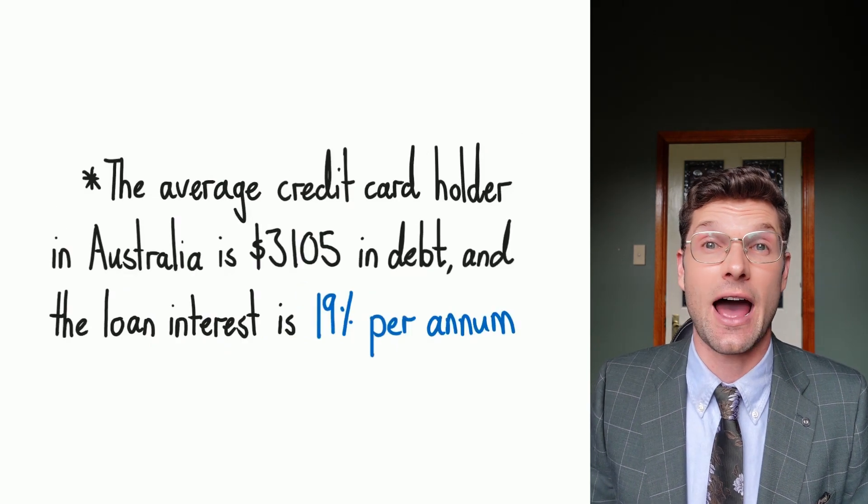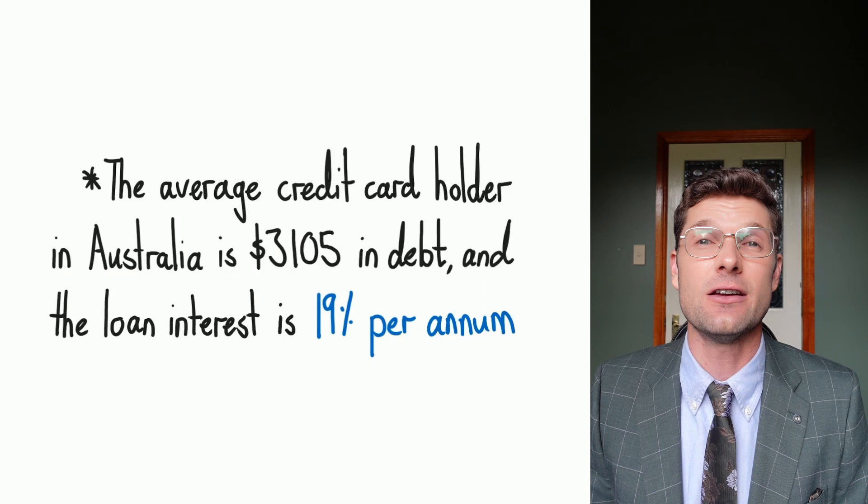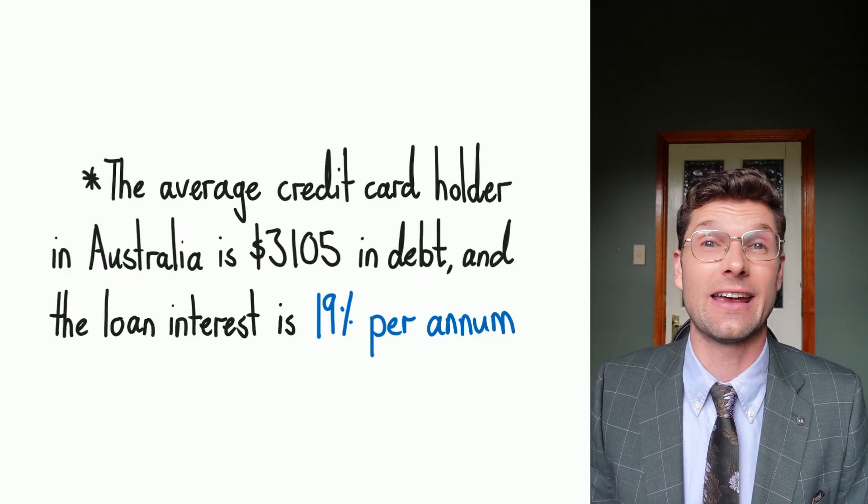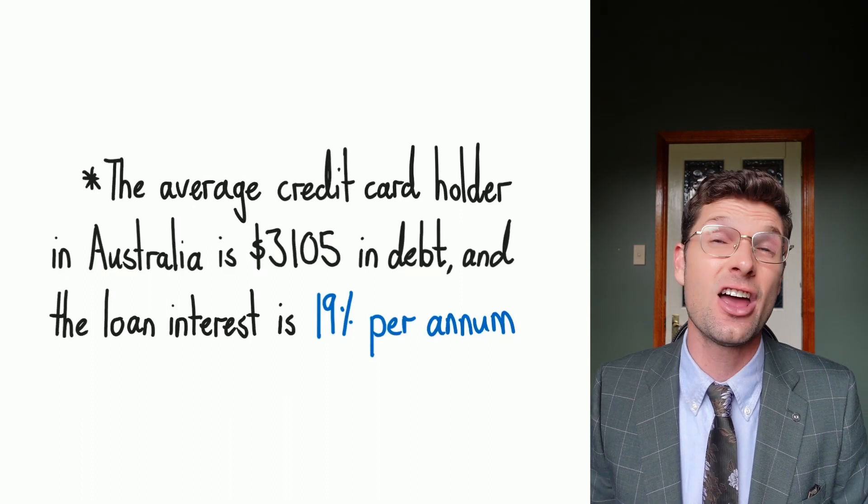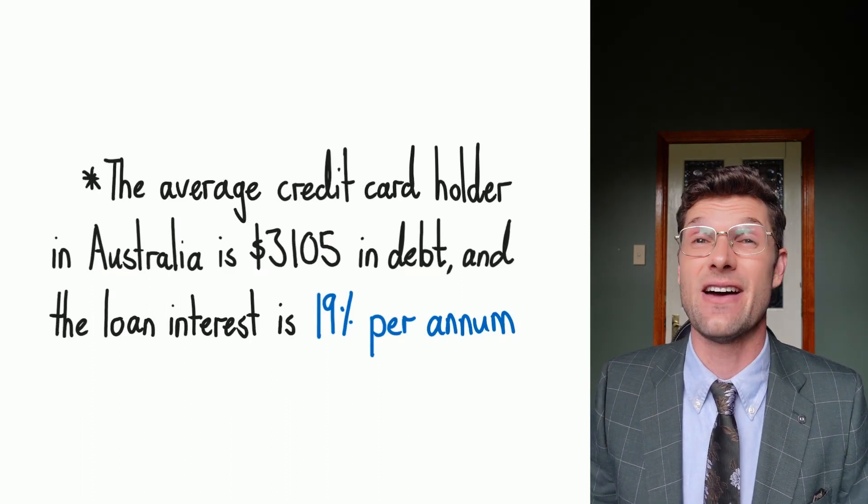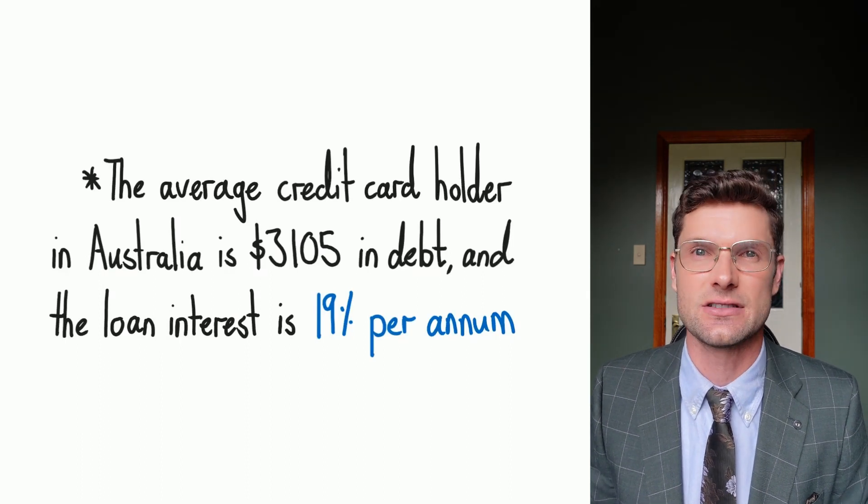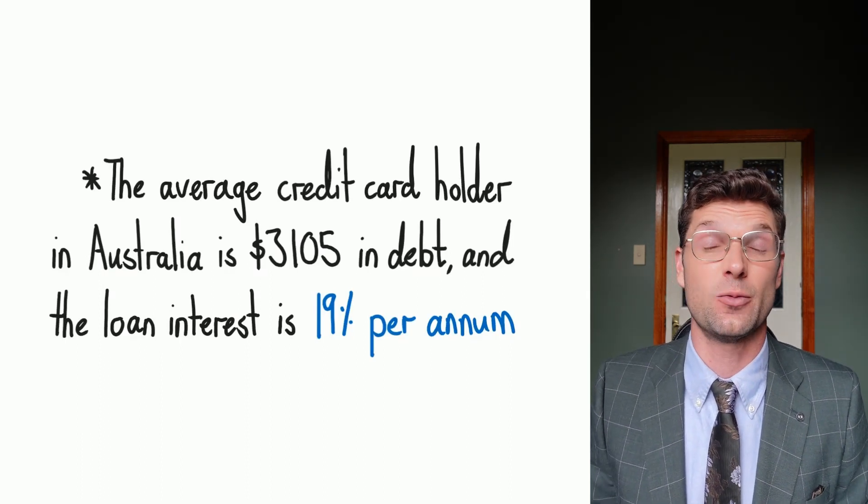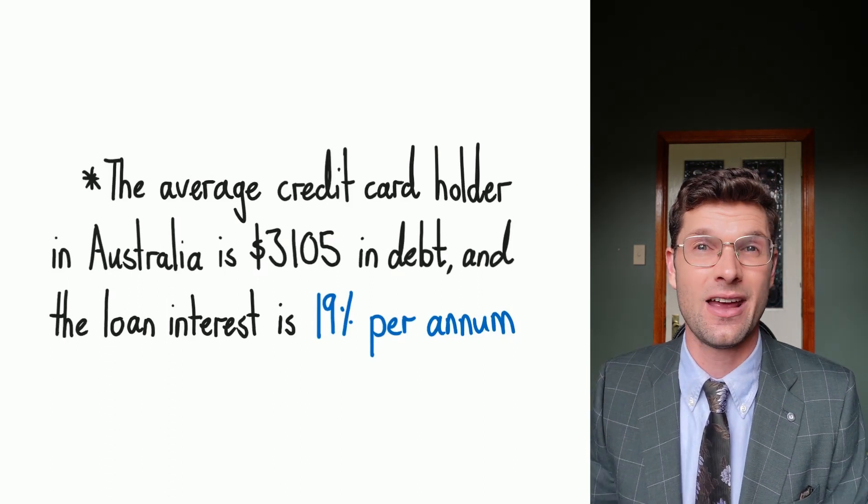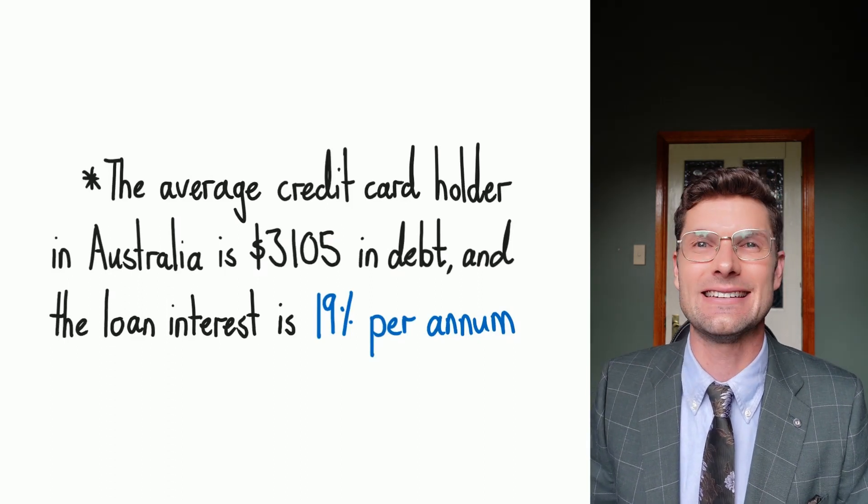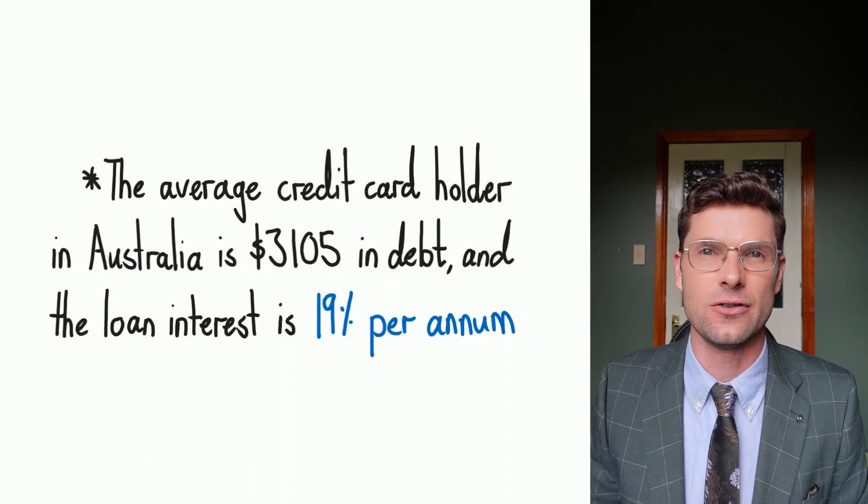So the average credit card holder is in debt $3,105 at a rate of 19% per annum. We've been looking at a lot of examples with these interest rates between kind of 5 and 10%, so 19% is massive, and that is something that you've got to be aware of if you are going to get a credit card straight after school. So this means that we've got quite a lot of debt, $3,000 at nearly 20% per annum, and these guys are compounding daily just to make sure that they're getting all the money they can out of you.